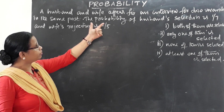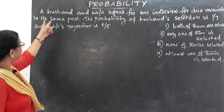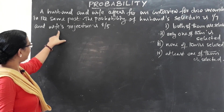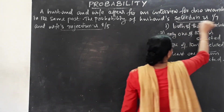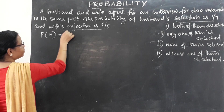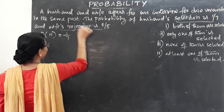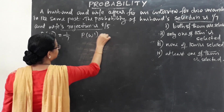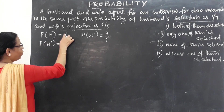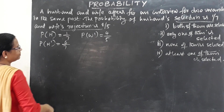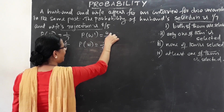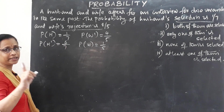A husband and wife appear for an interview for 2 vacancies in the same post. The probability of the husband's selection is 1/7, and the probability of wife's rejection is 4/5. So: probability of husband H equals 1/7, probability of wife's rejection W' equals 4/5, probability of H' equals 1 minus 1/7 which is 6/7, and probability of wife W equals 1/5.